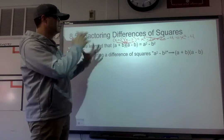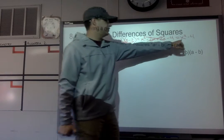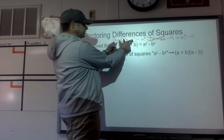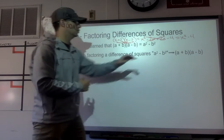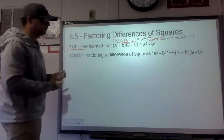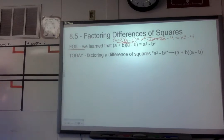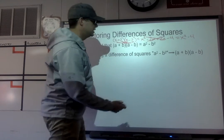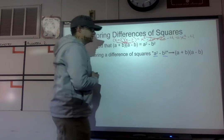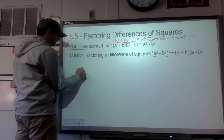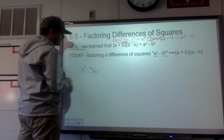Today we're going to be taking that but working backwards. We would be given x² - 4, and instead of being given two binomials to foil, we're given the binomial x² - 4 and we know we can factor that using the difference of squares. In order to factor using a difference of squares, both a and b must be perfect squares. An example could be x² - 36.